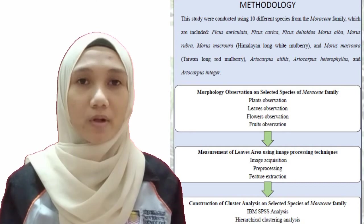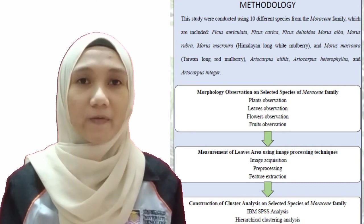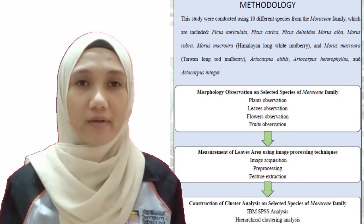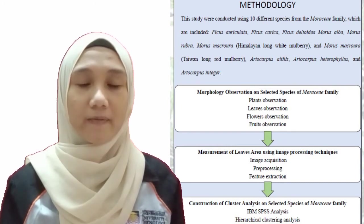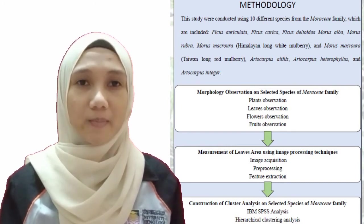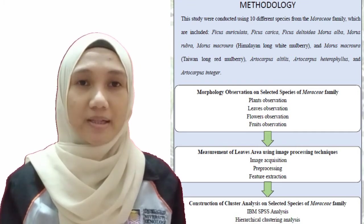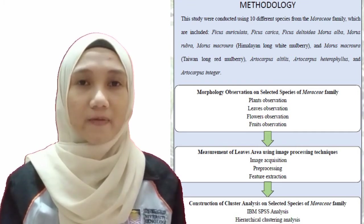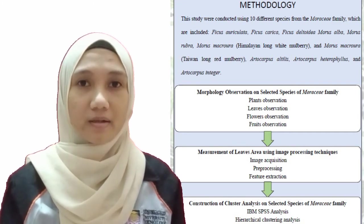The image processing technique was performed. Five geometric features including diameter, length, width, area and perimeter of the leaf were automatically measured using ImageJ software. This technique was used to determine leaf type according to the morphological characteristic.